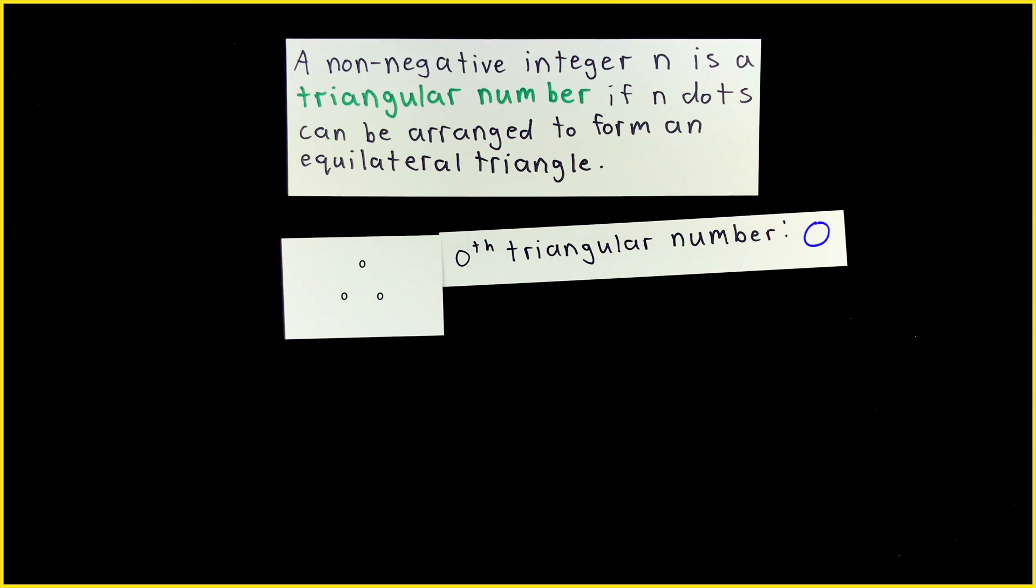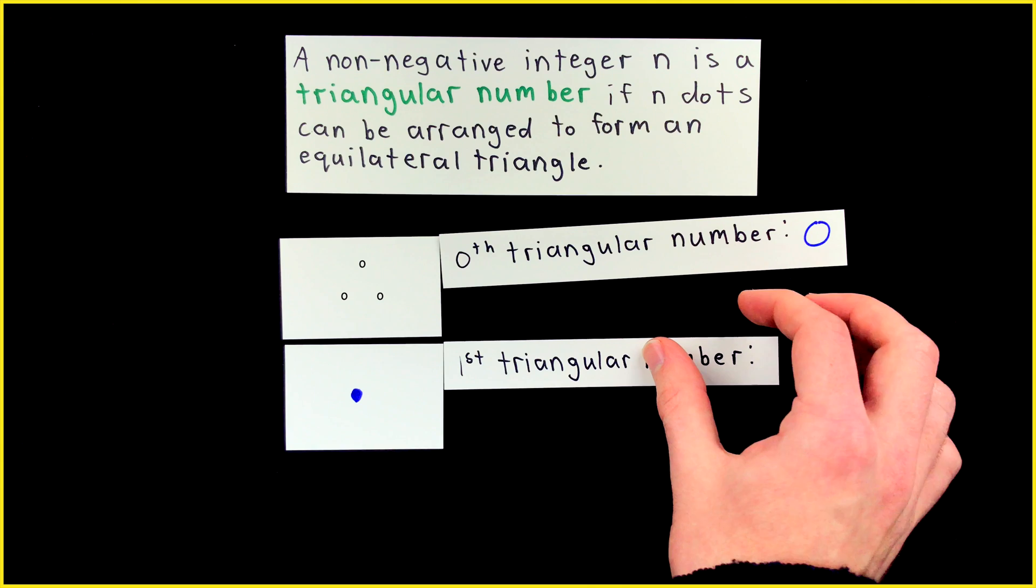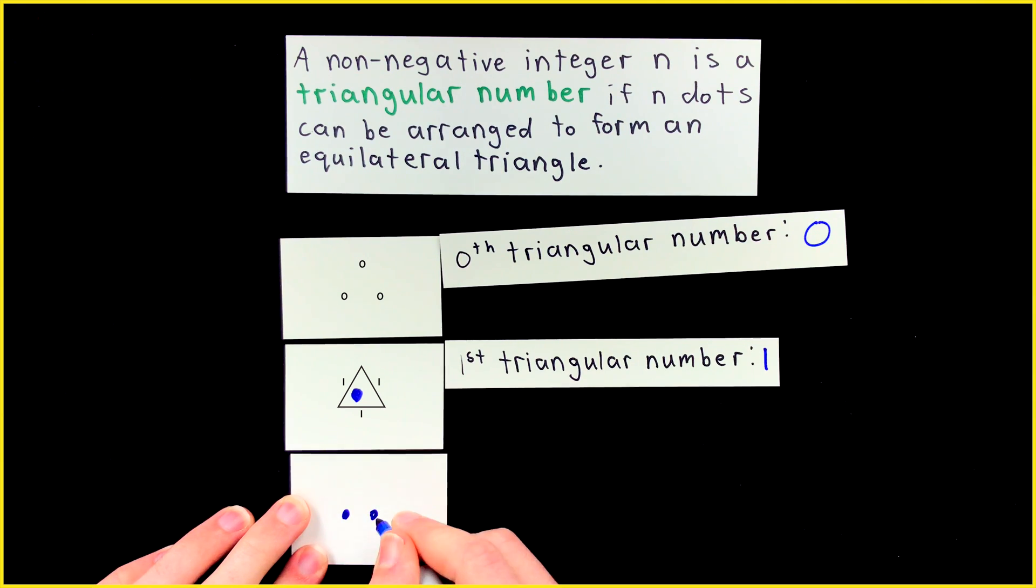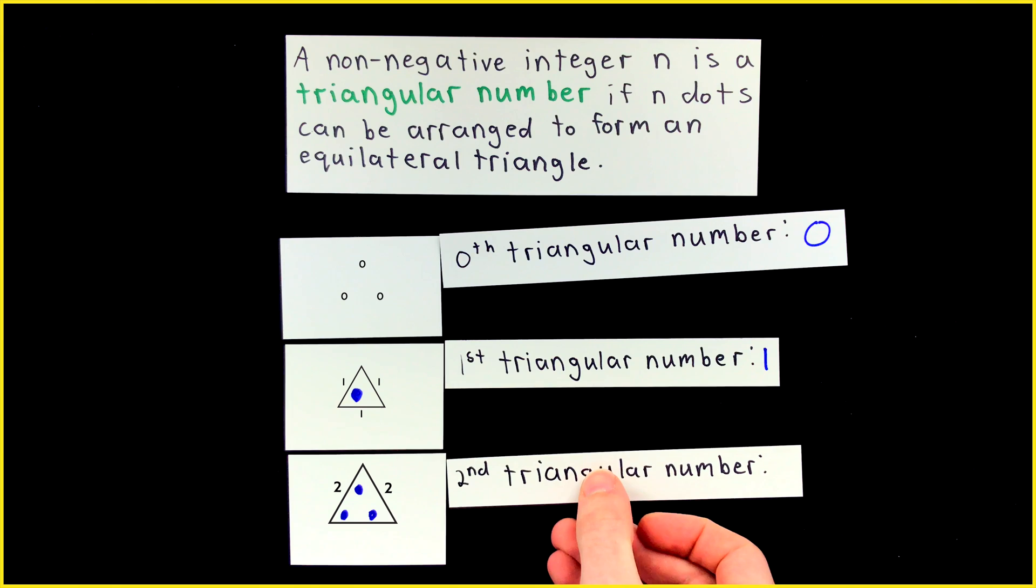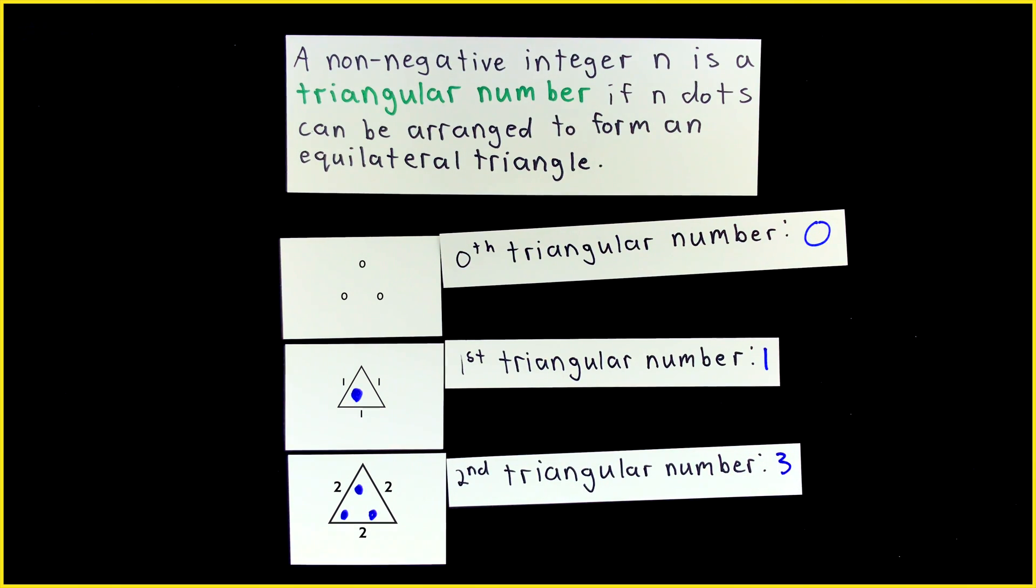Still not impressed? How about this? One is the next triangular number. Plot that hot dot in any spot, and you've got an equilateral triangle with side lengths all equal to one. Two dots won't give us a triangle, but three dots sure will, so three is the second triangular number. Every side of this triangle has length two.